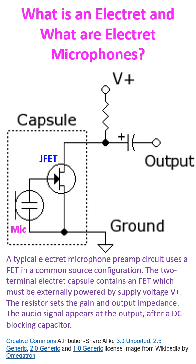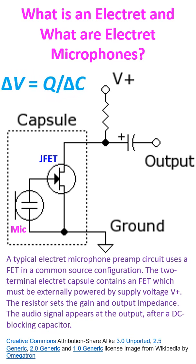Sound waves move the diaphragm, changing the capacitance, delta C, and produce a corresponding voltage change, delta V, across the capacitor, which is directly proportional to the charge in the capacitor, Q, and inversely proportional to the change in capacitance with movement. Delta V equals Q divided by delta C, as seen in the diagram.